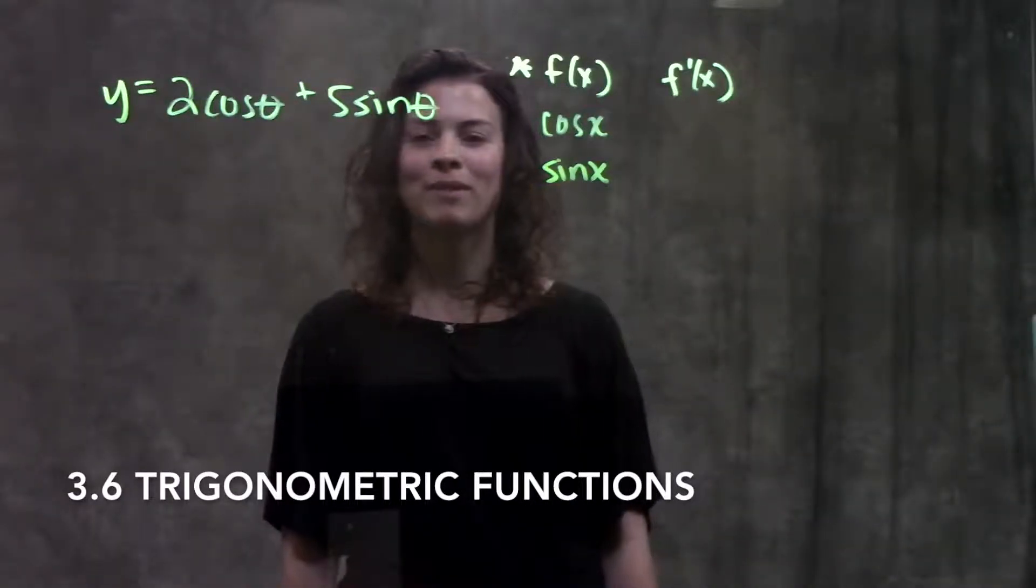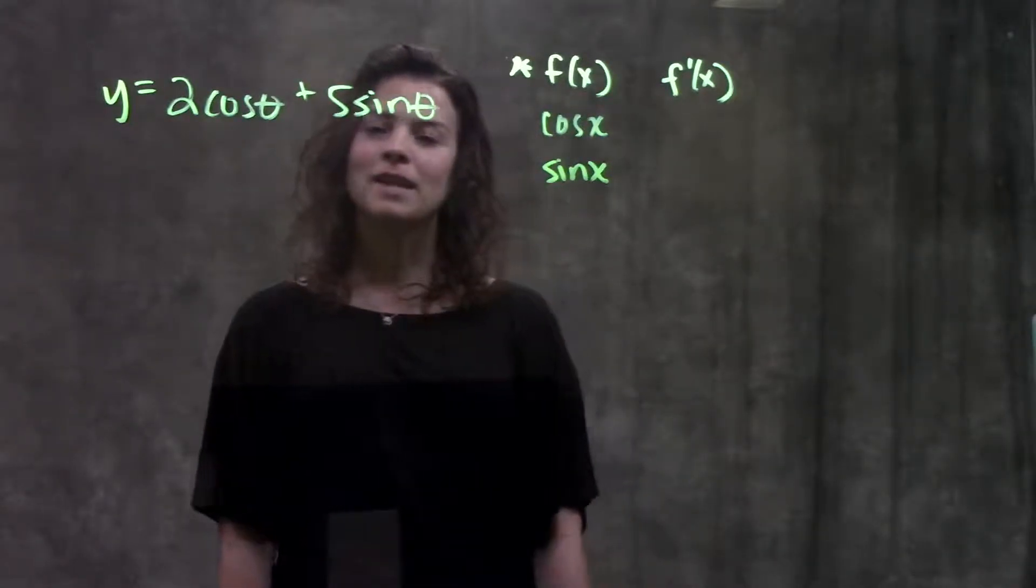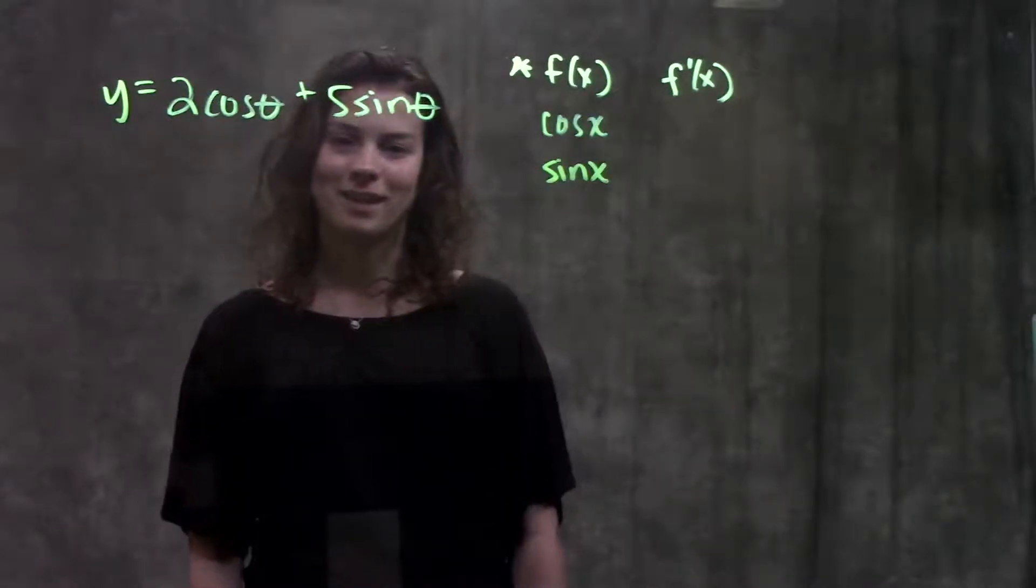This is section 3.6, Derivatives of Trig Functions. In this video, we're going to go through an example problem. It's not found in your book, but it's an equation that includes both cosine and sine functions.